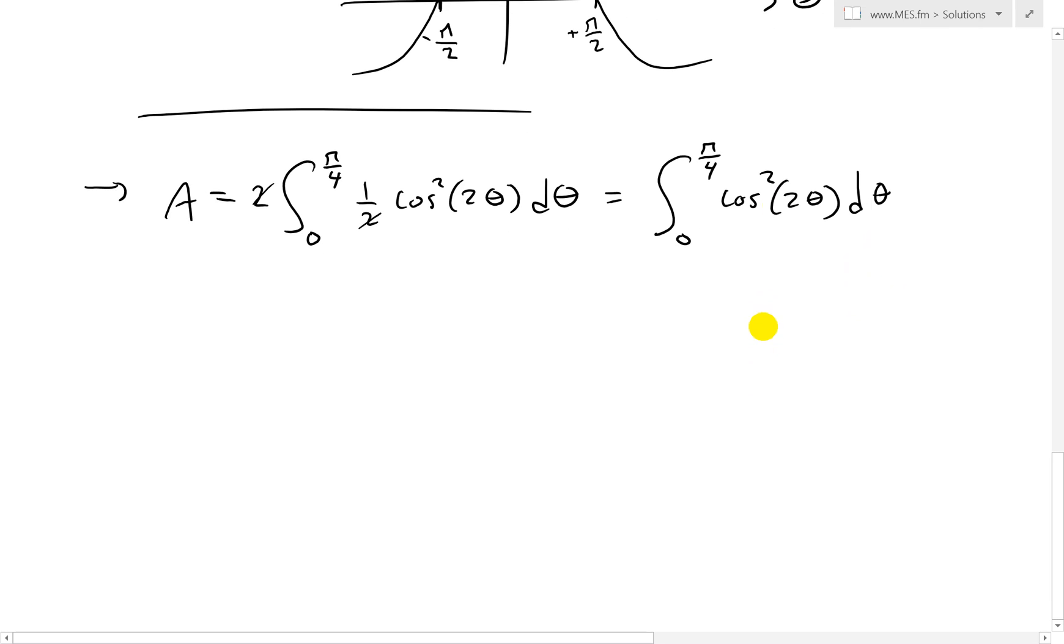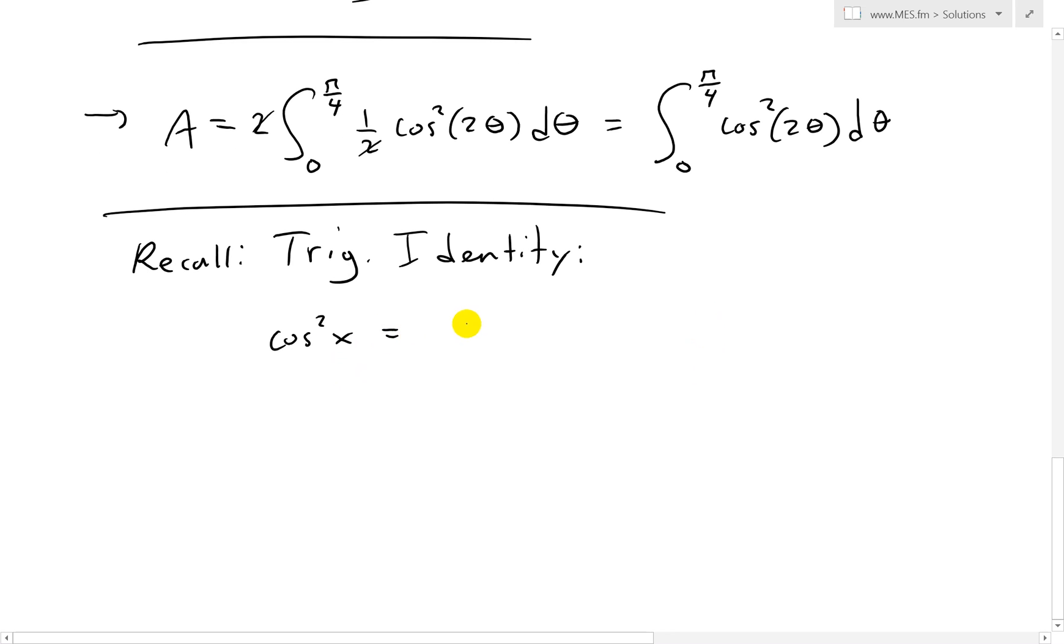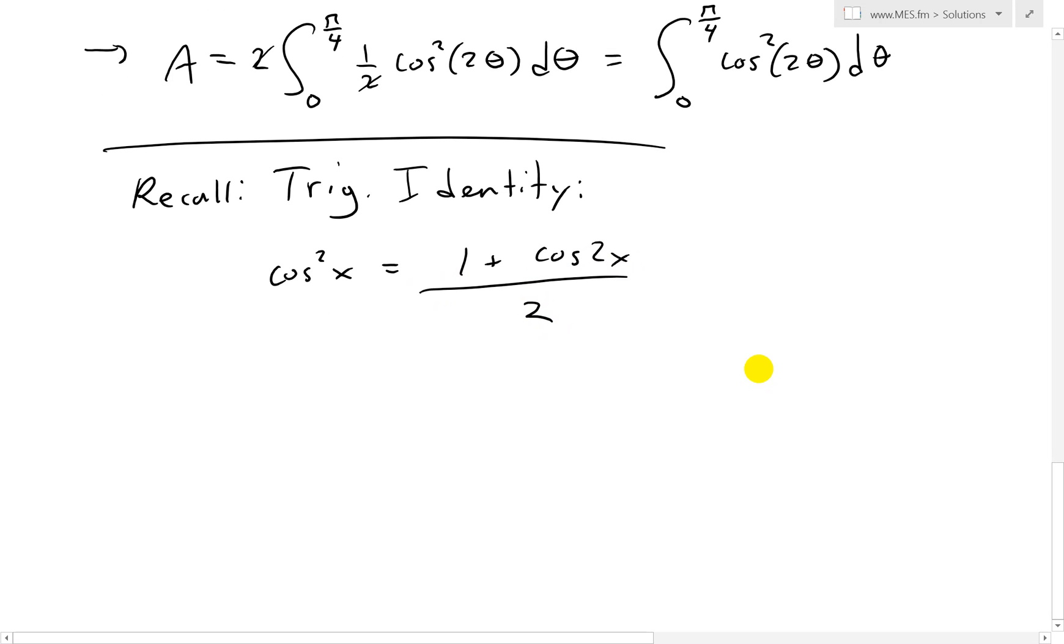And now, before we try to solve that, recall the trig identity. This is the half angle one. I'll put this also in the video description below, so make sure to check it out. And that identity is cosine squared x equals 1 plus cosine 2x all over 2. But in our case right here, I'll write in our case, because we're dealing with 2 theta.